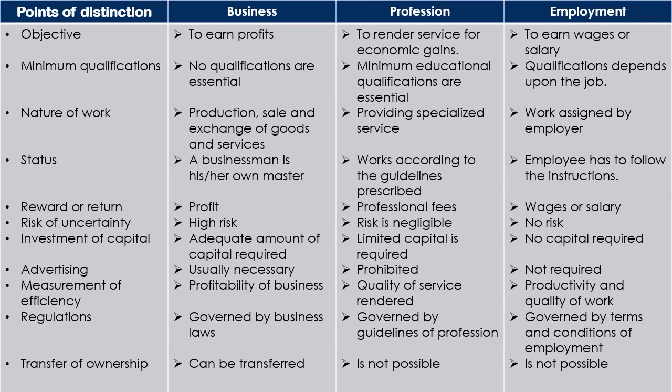The reward in business is profit; in profession it is professional fees; in employment it is wages or salary. There is high risk in business because there is no certainty. The risk in profession is negligible — if fees from somewhere are unsatisfactory, you can just reject it. In employment there is no risk — the employee doesn't worry about the business's ups and downs, only their salary. If unsatisfied, they can leave and find another job.